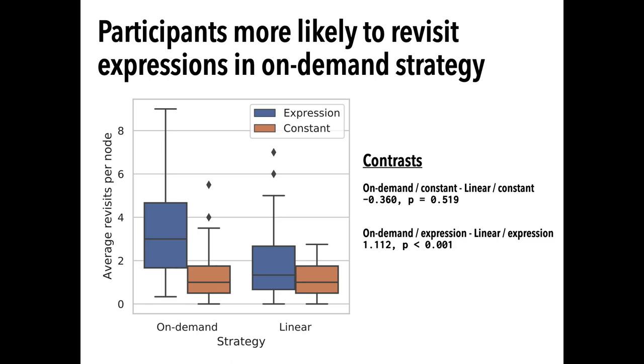In this graph, the x-axis separates each strategy, linear and on-demand, and the y-axis shows the average number of revisits per node type. Within a strategy, the colors differentiate revisits to lines with expressions, in blue, or lines with constants, in orange.